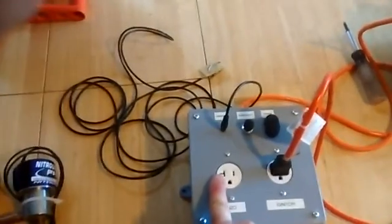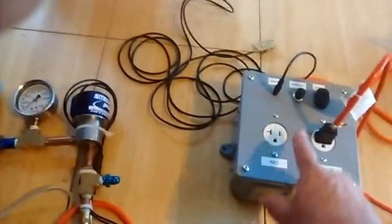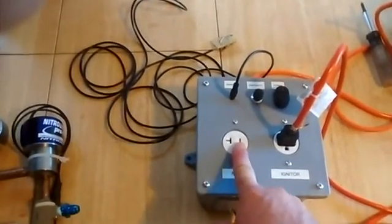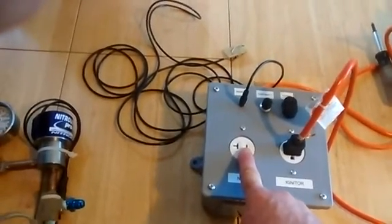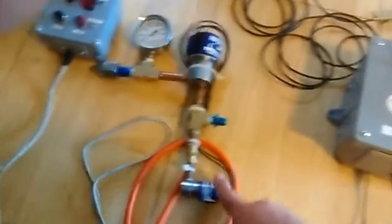So one lead goes to both solenoids and the upper right one, which is the black lead, goes to the main solenoid. And the ground lead, the green one, goes to the dump solenoid.